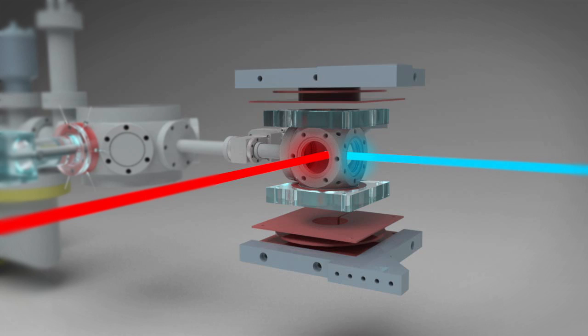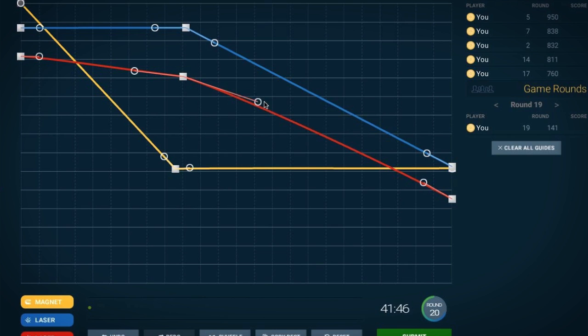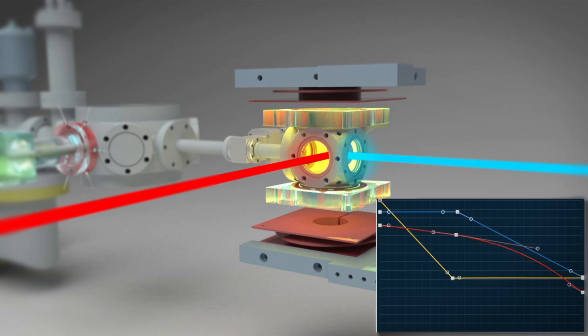This is the part our players control online. Players have a tool for modifying three curves that determine how the magnetic field and the lasers are turned on and off.